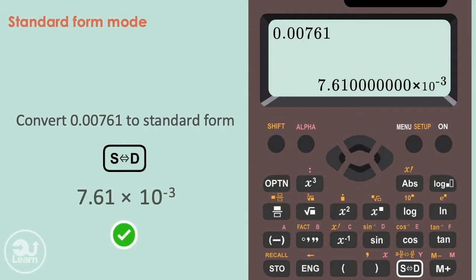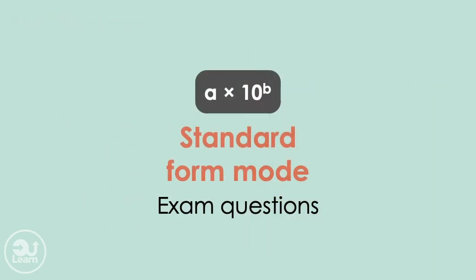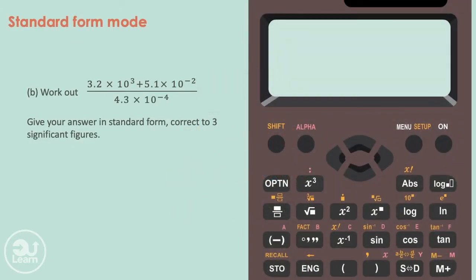Let's have a look at an exam style question. We can easily convert complex calculations with the settings changed. For example, work out 3.2 times 10 to the power of 3, plus 5.1 times 10 to the power of negative 2, all over 4.3 times 10 to the negative 4. Give your answer in standard form, correct to 3 significant figures.